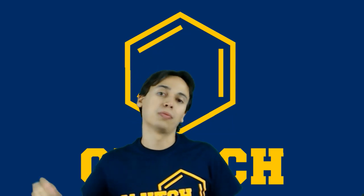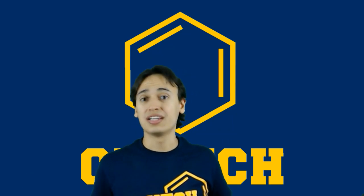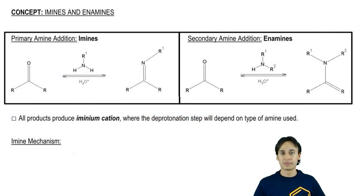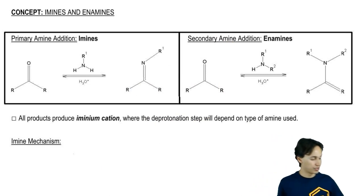In this next page, we're going to talk about the nucleophilic addition of neutral amines to carbonyls. This is going to yield imines and enamines. The difference between an imine and an enamine is simply going to be the type of amine that the carbonyl is reacting with.